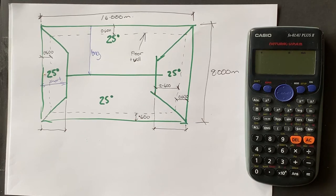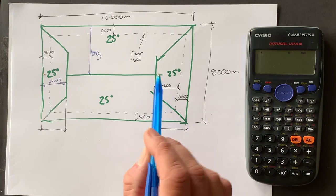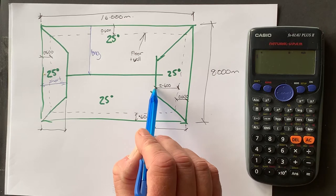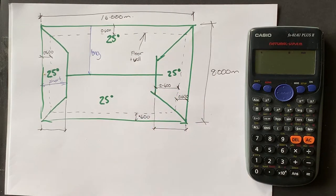And the other bit of information you'd need would be how long, so the Dutch gable is where there's a gable here and the hips go up to it, so how far from the top plate it would be to the Dutch gable itself.